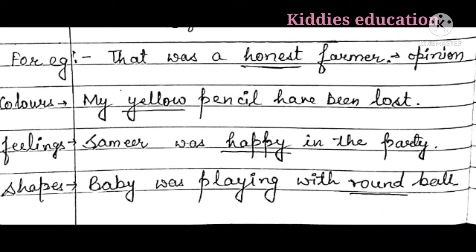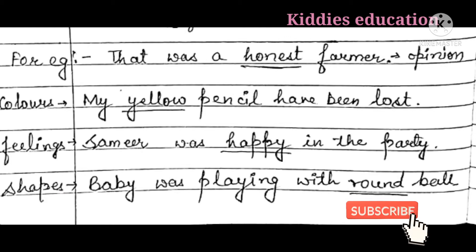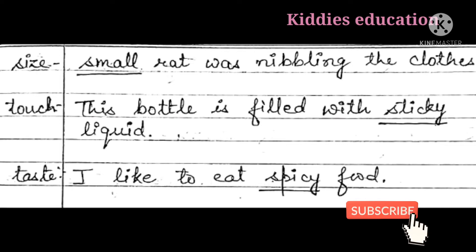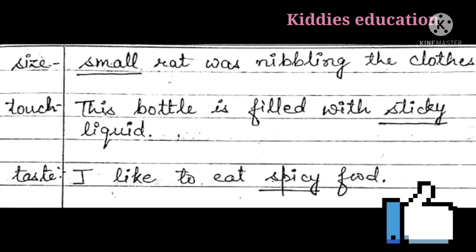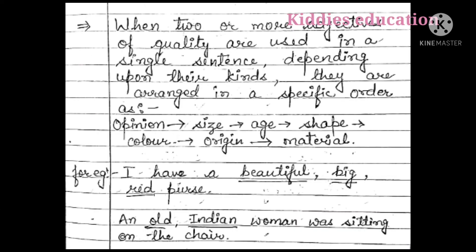'Samir was happy at the party' — happy is a feeling, so it is an adjective of quality. 'Baby was playing with a round ball' — round describes the shape of the ball, making it an adjective of quality. 'Small rat was nibbling the clothes' — small tells about the size of the rat. 'That bottle is filled with sticky liquid' — sticky describes touch. 'I like to eat spicy food' — spicy describes taste. All these words are adjectives of quality.